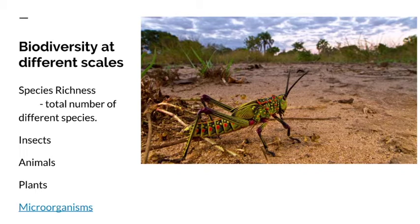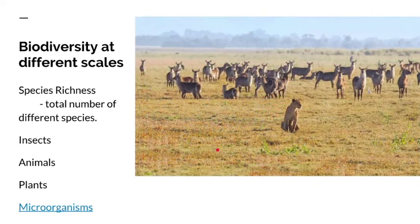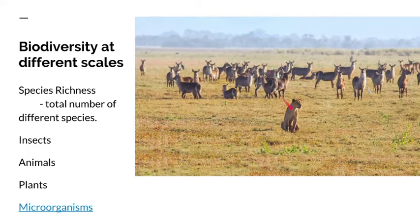Biodiversity can be measured at many different scales, from very small to very large. One of the ways that we measure biodiversity is in species richness, which is just the total number of different species interacting together. Scientists will go out into the field and count up how many different species they can find, often at a specific scale. So instead of counting all organisms, they'll count just all the organisms of one type — for example, how many different insects interact in this ecosystem, or how many different animals there are. In this picture, there are a bunch of waterbuck, a lion, and one white bird, so we would say the species richness is three.